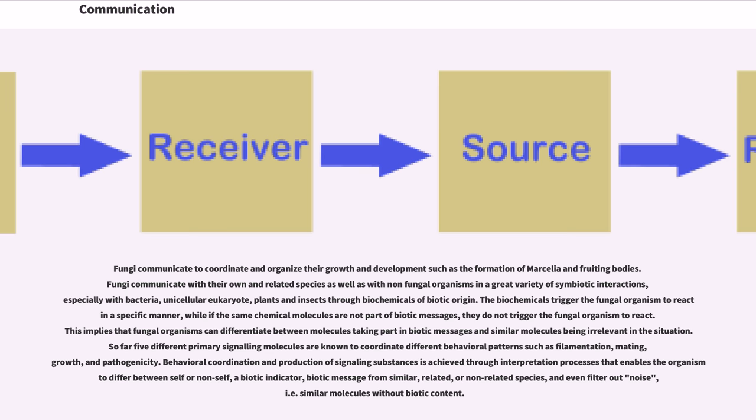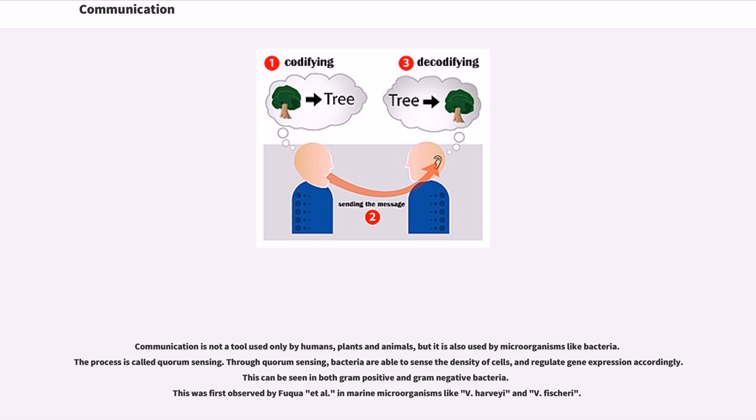Communication is not a tool used only by humans, plants, and animals, but it is also used by microorganisms like bacteria. The process is called quorum sensing. Through quorum sensing, bacteria are able to sense the density of cells and regulate gene expression accordingly. This can be seen in both gram-positive and gram-negative bacteria. This was first observed by Fuqua et al. in marine microorganisms like V. harveyi and V. fischeri.